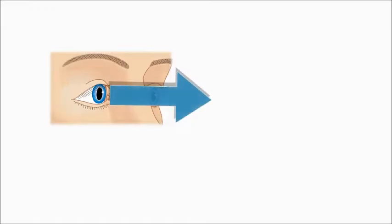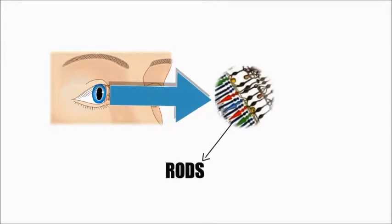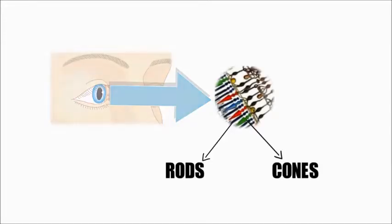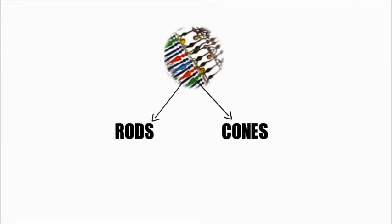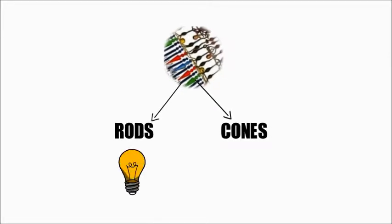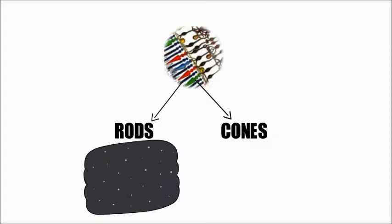Animals have two types of cells within their eyes: rods and cones. Rods are light-sensitive cells that cannot detect color, only black and white, providing the ability to see in dark environments.